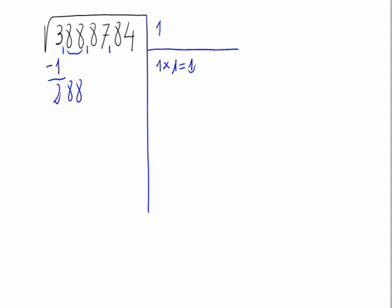You get the 1. The number we got here, 1's double is 2. So you write here 2. Always the double of the number you get on top.